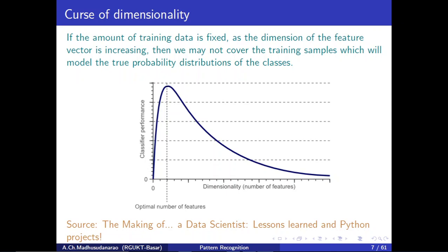By removing irrelevant features and redundant features, we can reduce the dimension automatically. If we reduce the dimension, we require less training data for the training process.